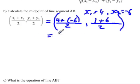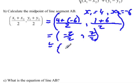And so, 4 plus negative 6 is negative 2 over 2, and 1 plus 6 is 7 over 2. So this is equal to negative 1 and 7 over 2. That's the midpoint of line segment AB.